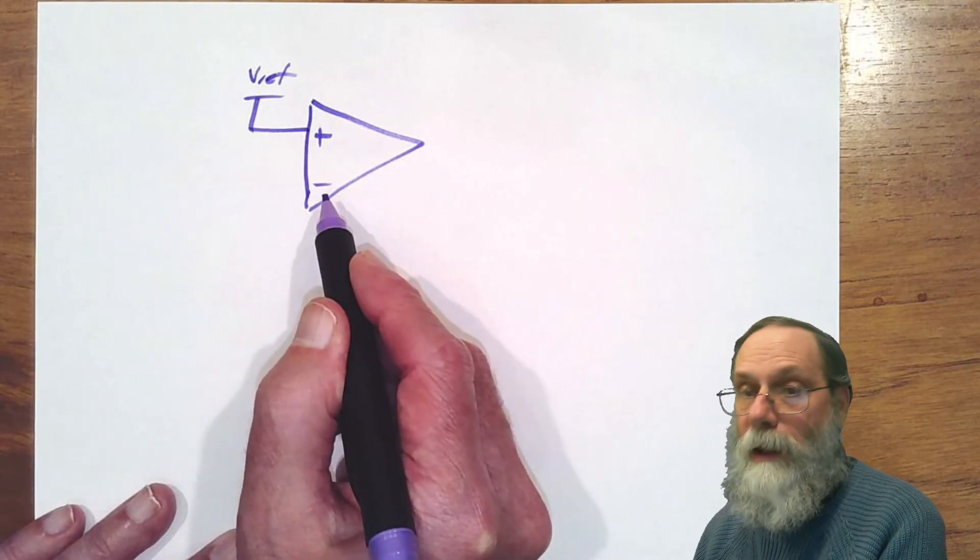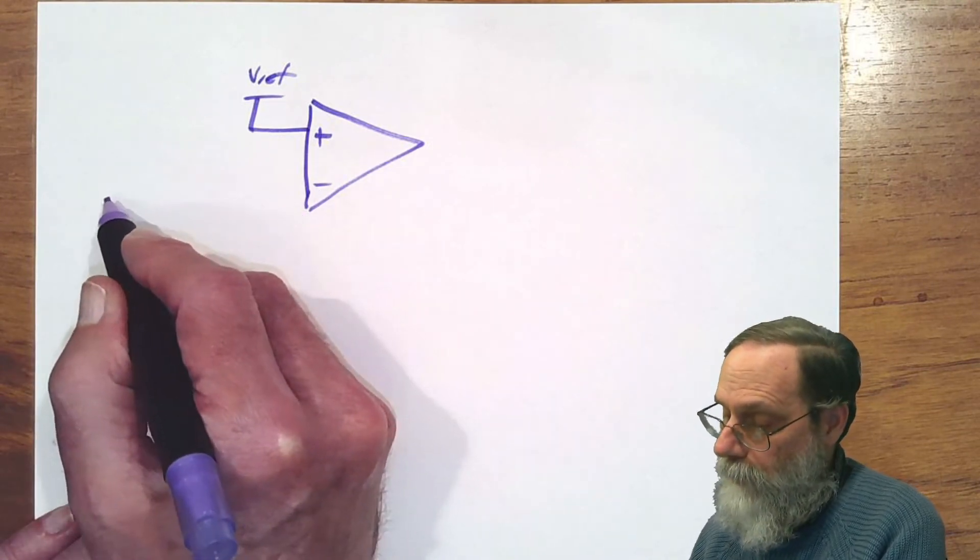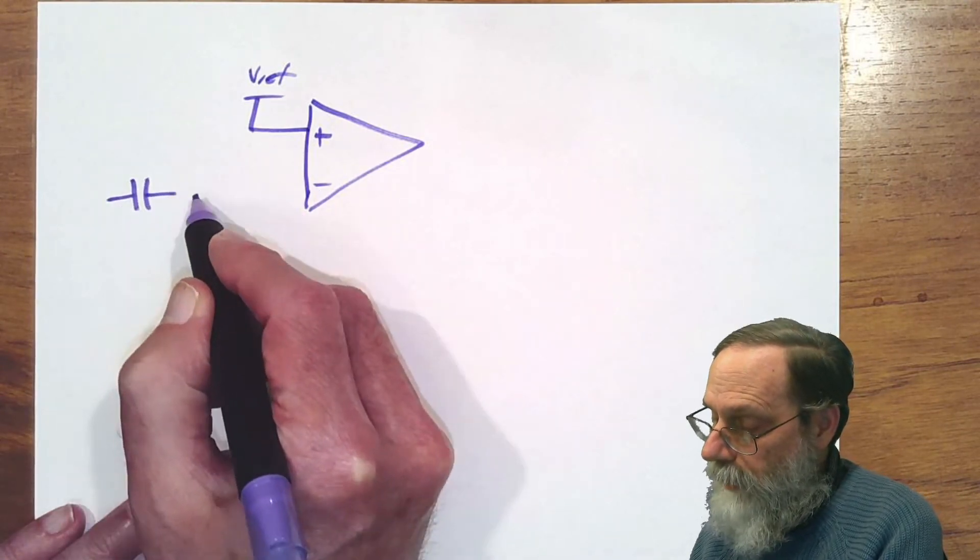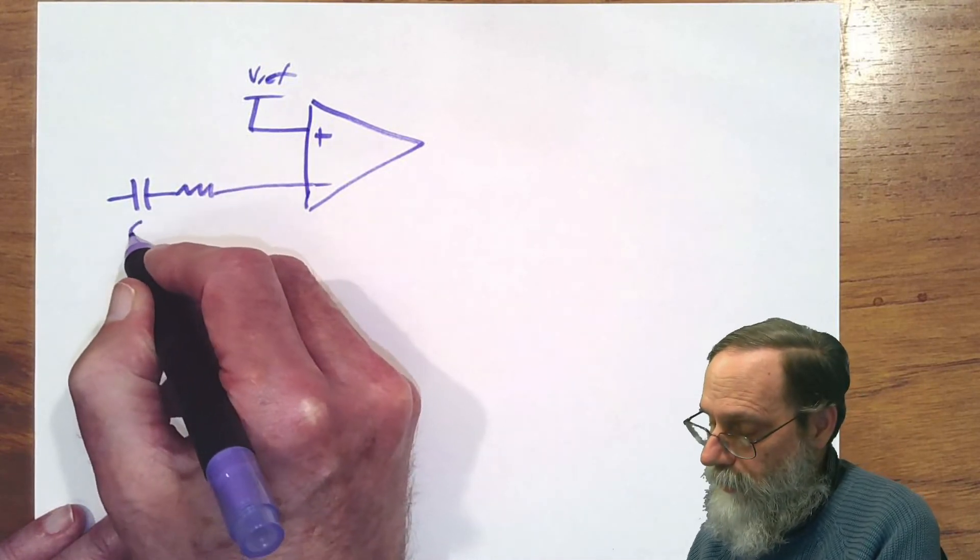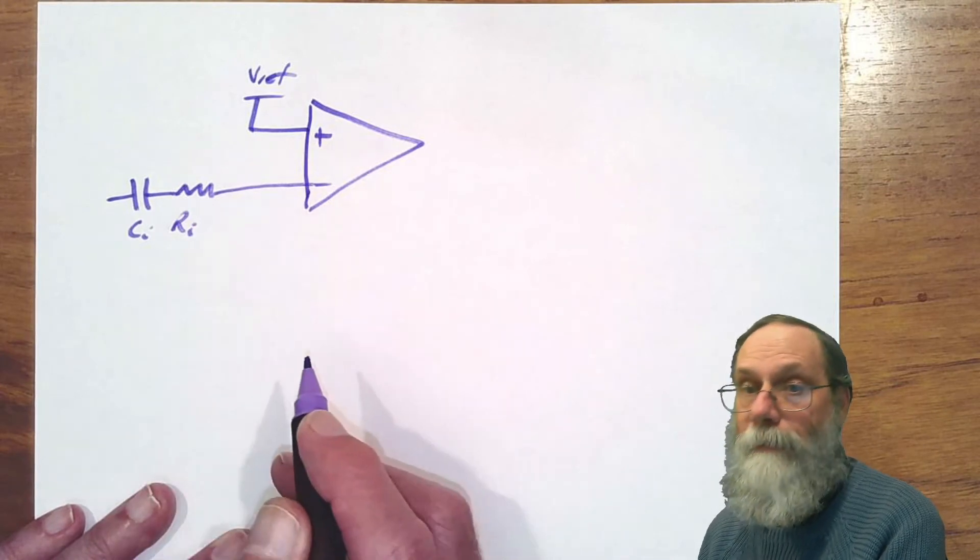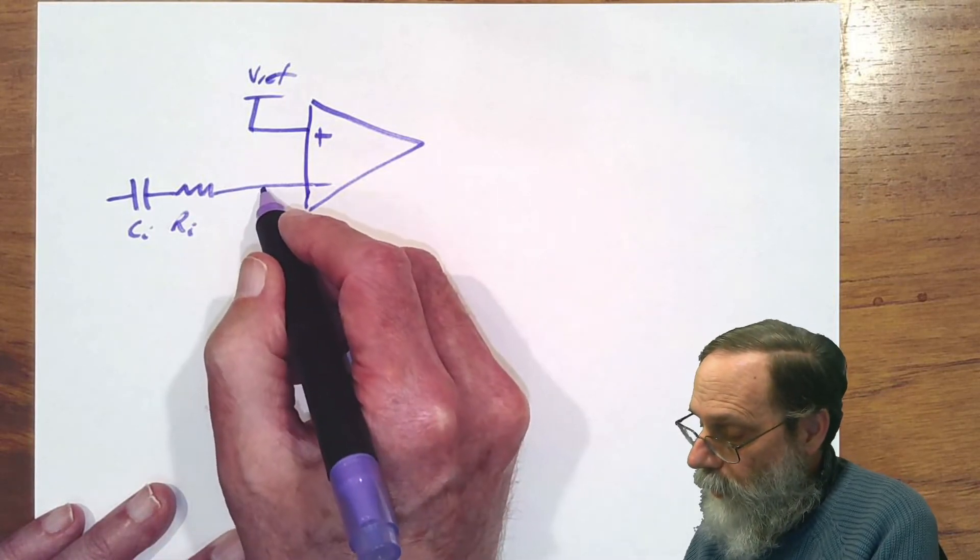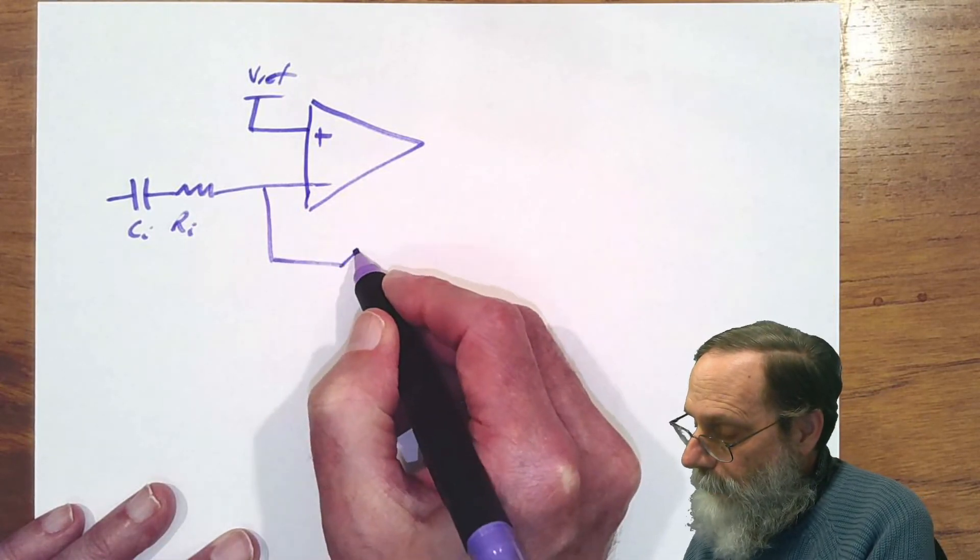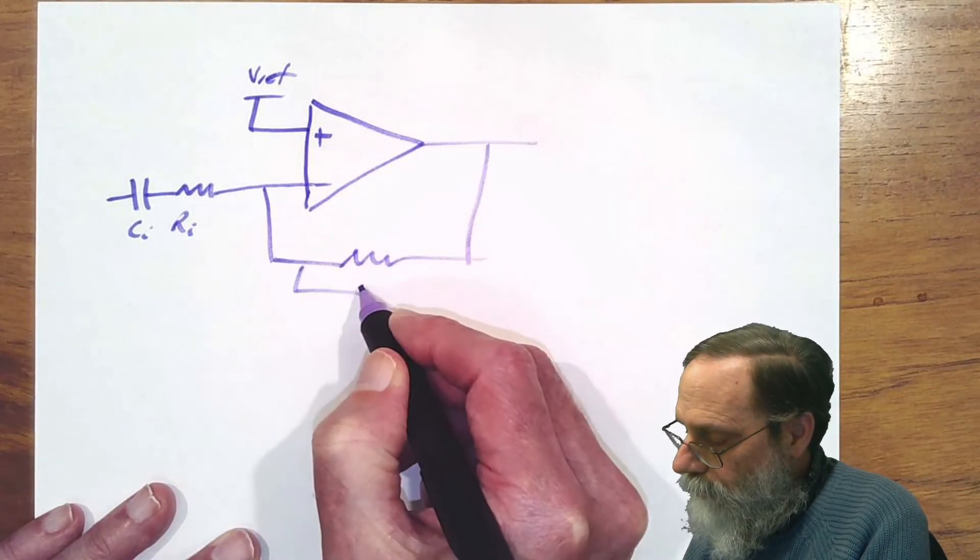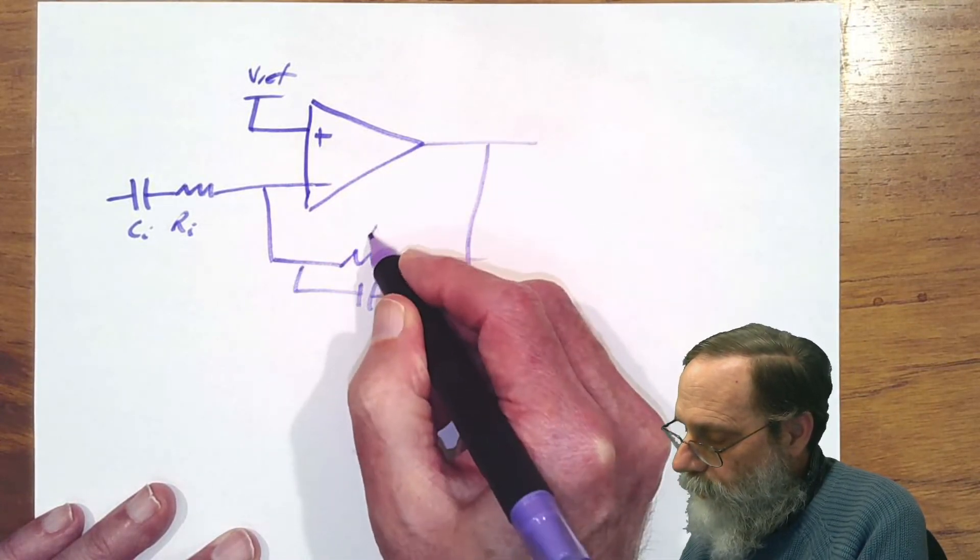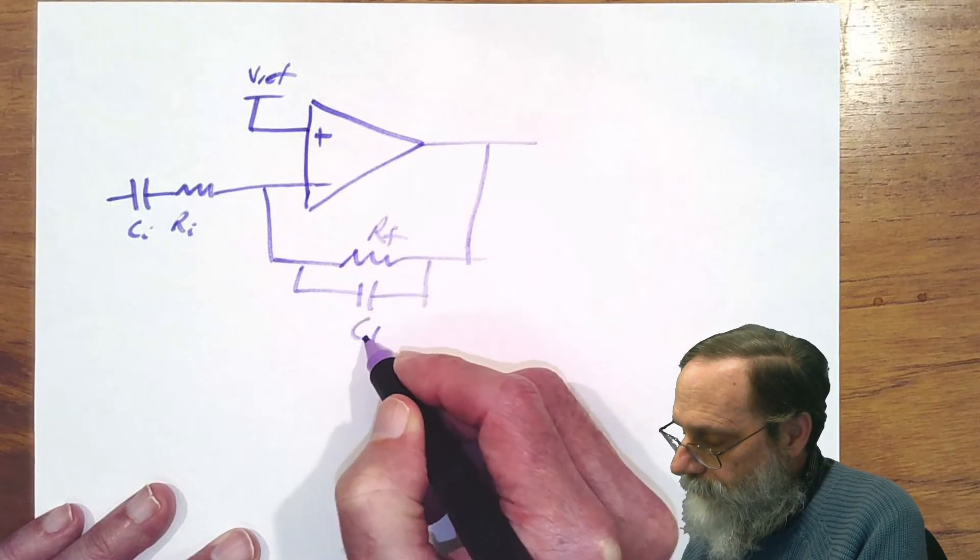For the negative input, we will have a DC blocking capacitor and a resistor. So let's call that Ci and Ri. For the feedback, we'll be putting them in parallel. Let's call that Rf and Cf.